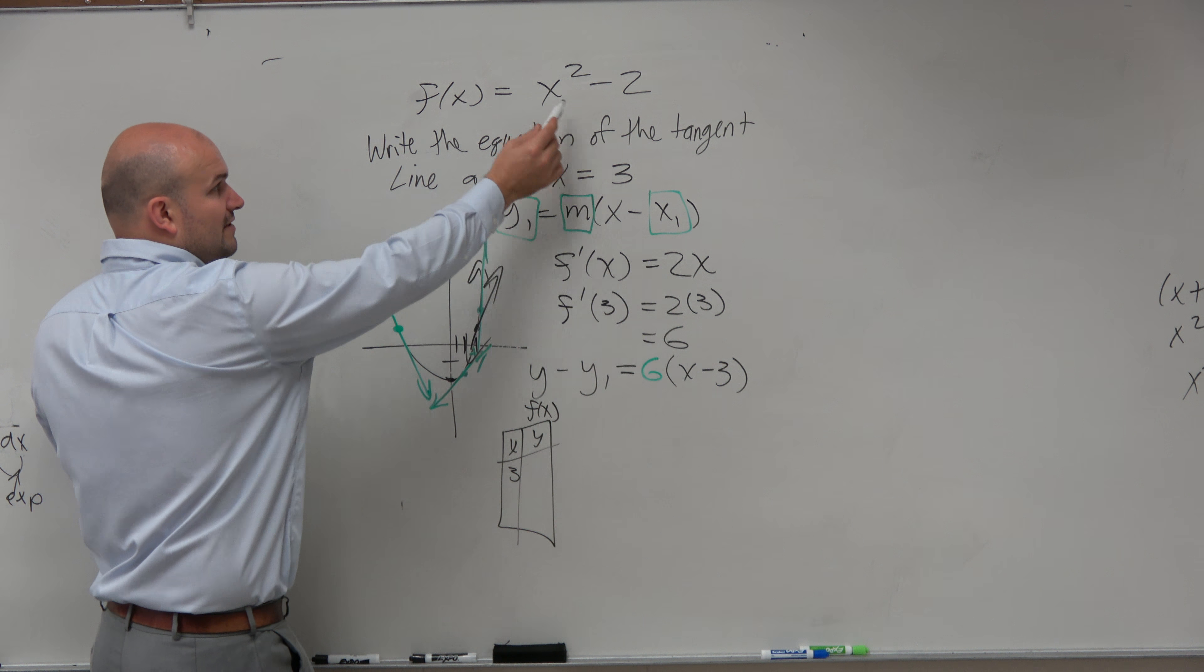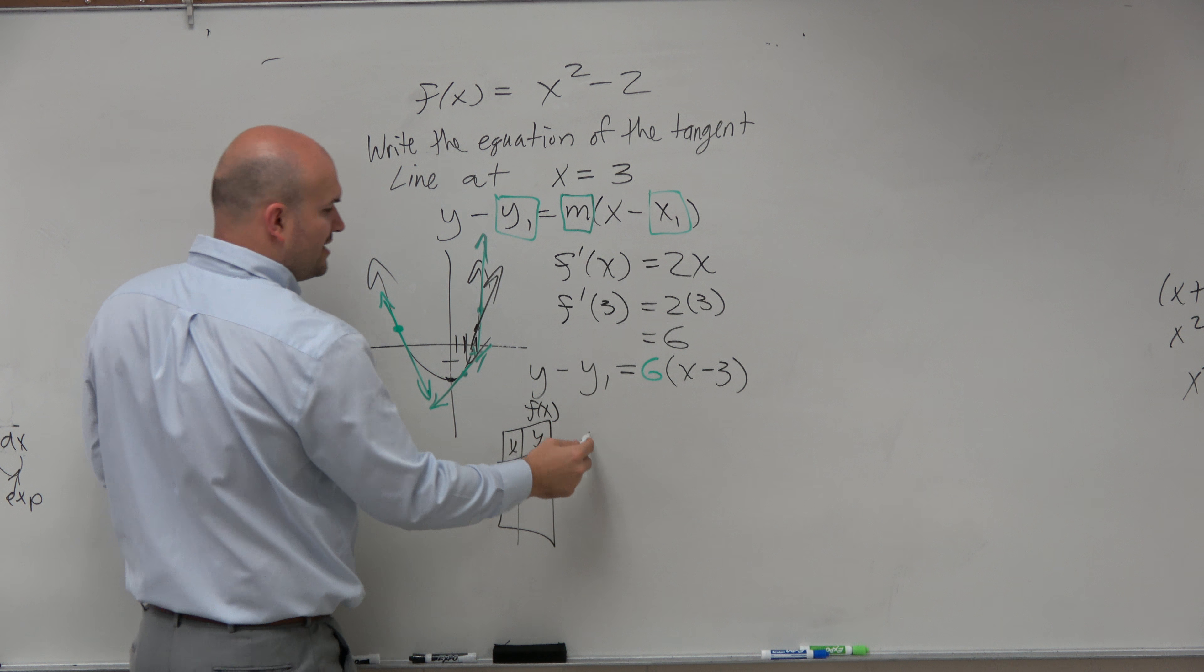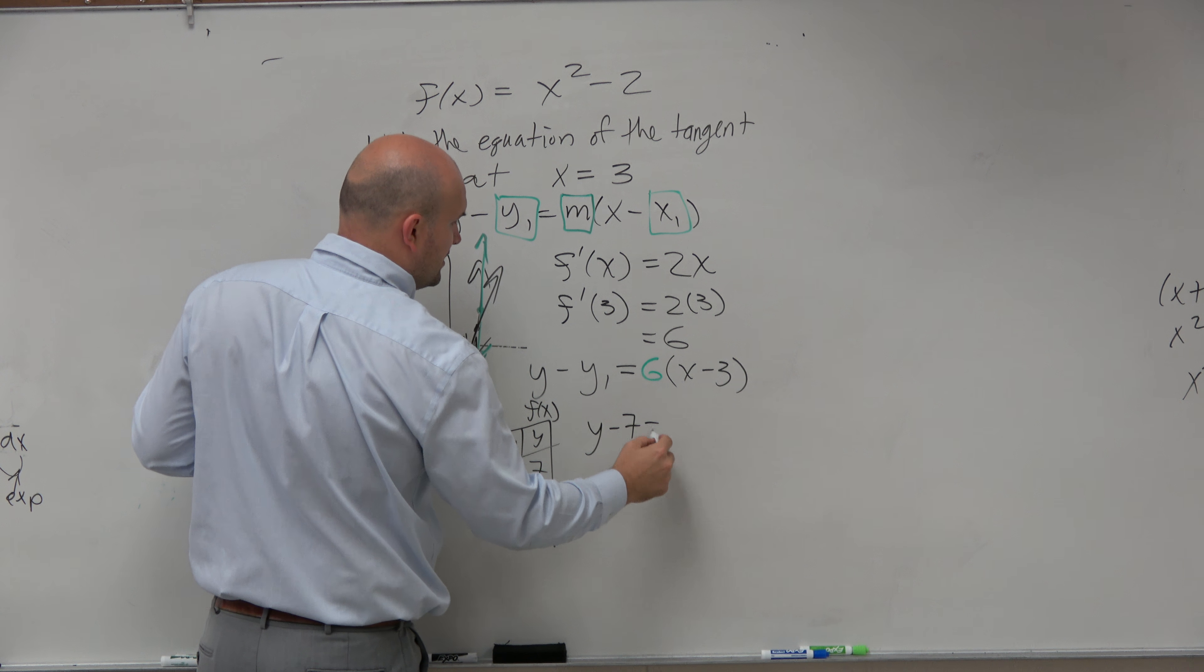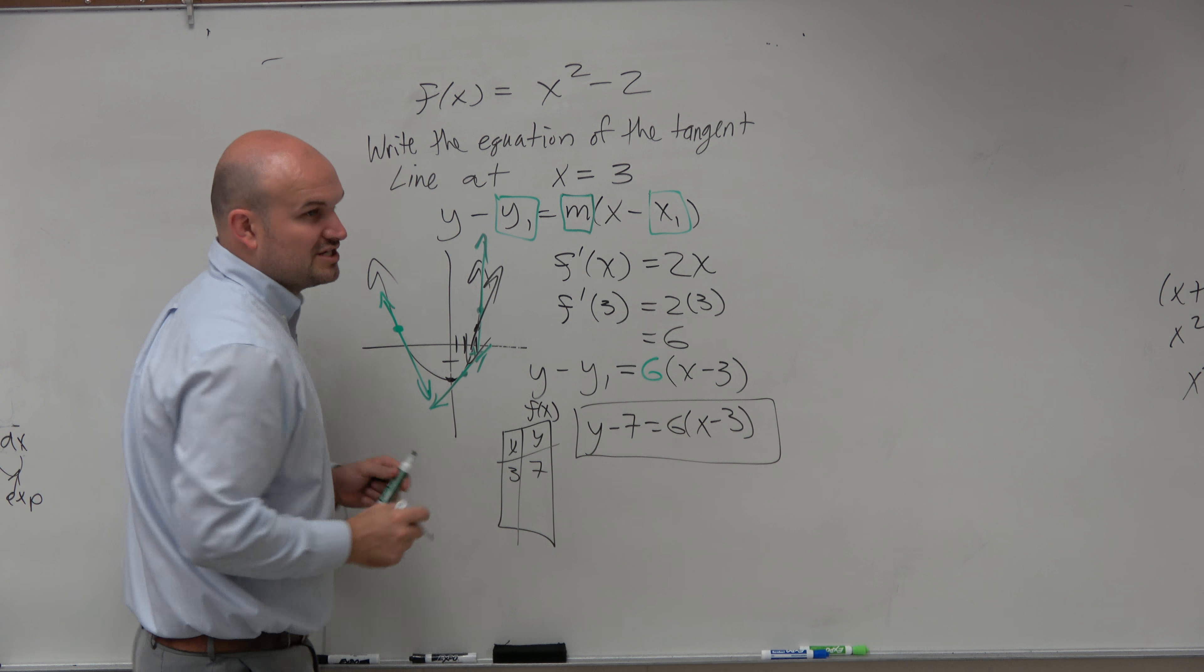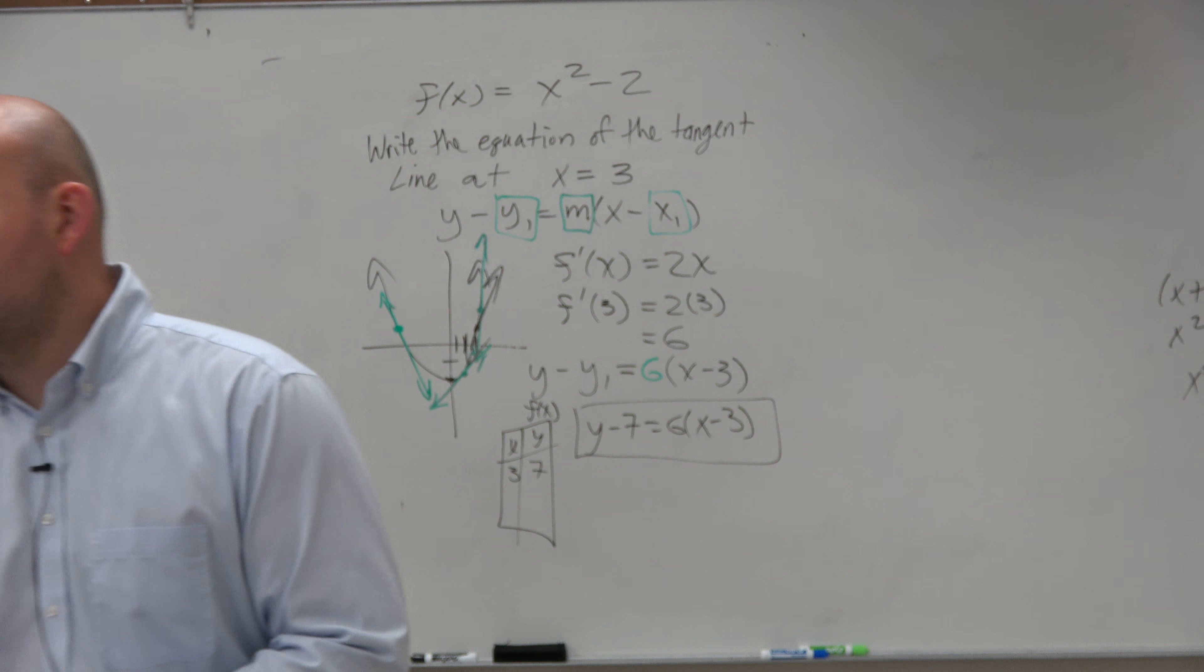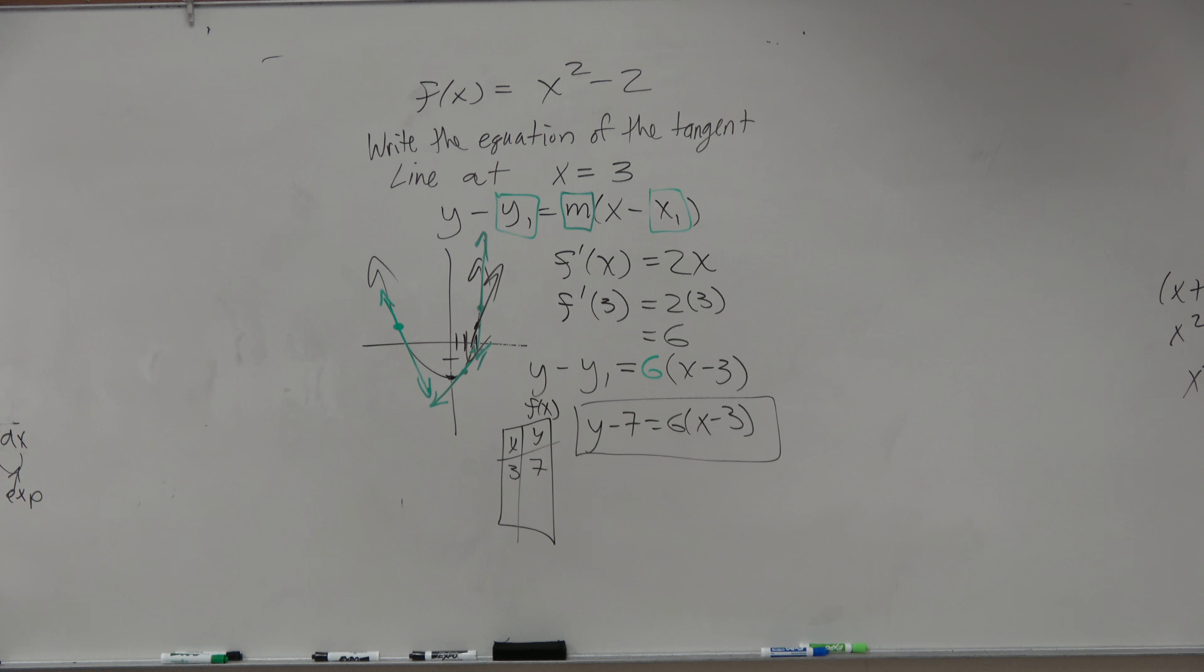What is that y-value? Plug in 3. 3 squared is 9, 9 minus 2 is 7. So the y-coordinate is 7, and our equation is y minus 7 equals 6 times x minus 3. That is the equation of the tangent line. You do not need to put it in slope-intercept form or simplify it any further.